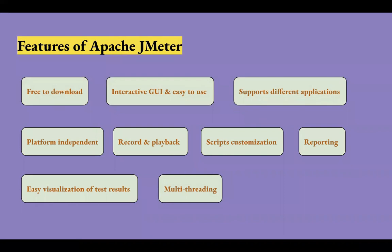JMeter provides the feature of sending concurrent requests at a time. For example, if you want to test the load of 10,000 users on your website, you can easily increase the load in JMeter — it supports multi-threading. JMeter also supports different testing types along with performance testing, like load testing, functional testing, regression testing, and SOC or endurance testing.